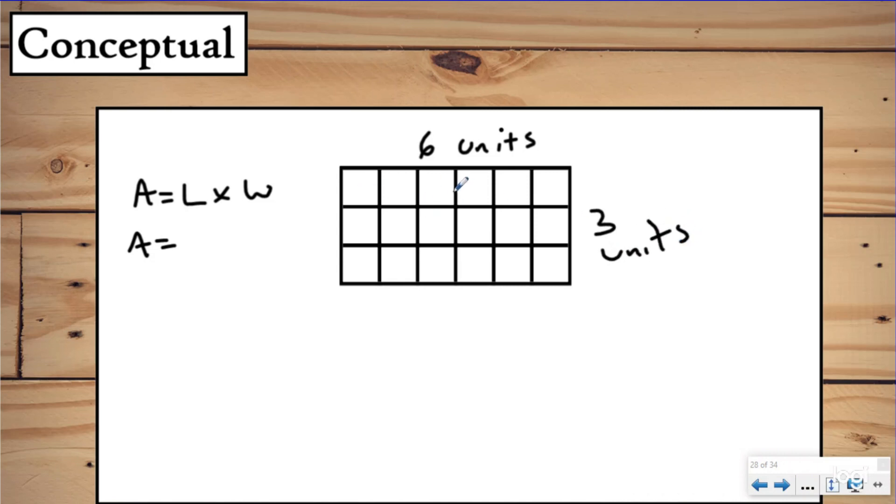And then instead of counting one by one, we realized this was really an array. So we're going to do six groups of three and solve this and figure out that our answer is 18 square units. So we started using the square units to actually help us figure out how long and how wide our rectangles were, right? We use these to count by once.